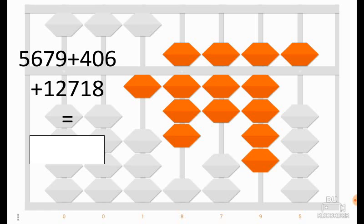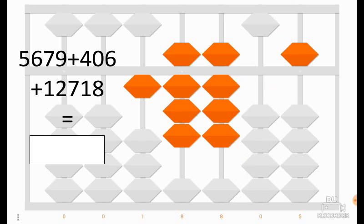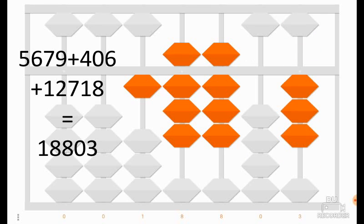Now we would like to add 8. We cannot add 8 because only 4 coins remain. So 8 is equal to 10 minus 2, but we also cannot add 10 because there are no coins remaining. So 8 is equal to 100 minus 92. To add 8, we add 100 and we remove 92 — we remove all coins in the tens column to remove 90, then remove 2 more. We remove 5 and add 3. And we have the result: the sum of the three numbers is equal to 18,803.